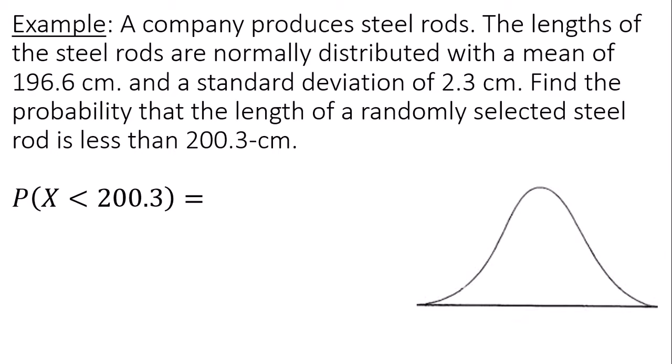Find the probability that the length of a randomly selected steel rod is less than 200.3 centimeters. So I'm finding the probability that a data value is less than 200.3 centimeters. For my distribution, the mean μ is 196.6 and standard deviation is 2.3.